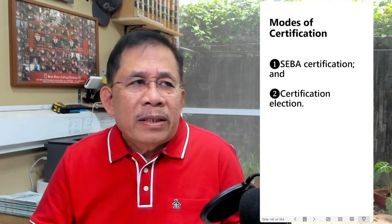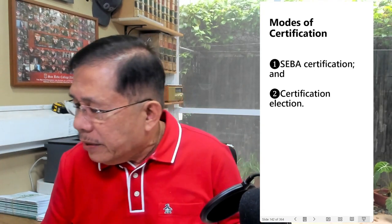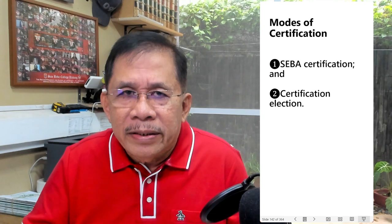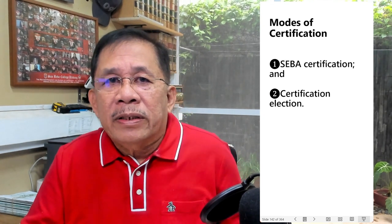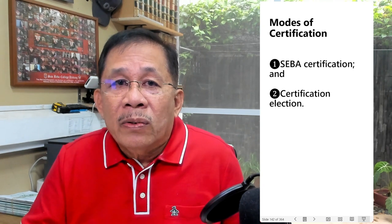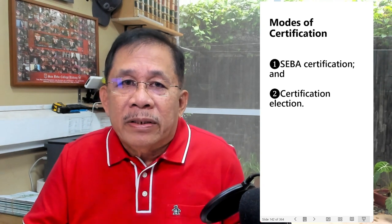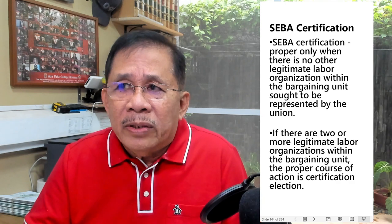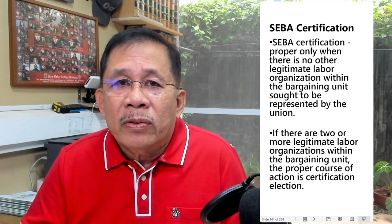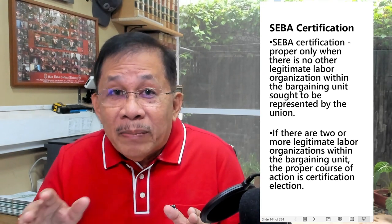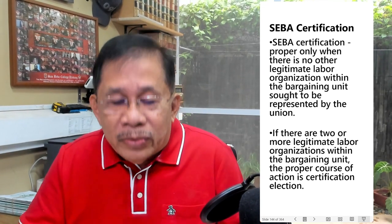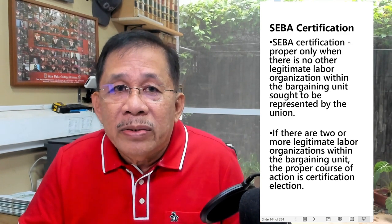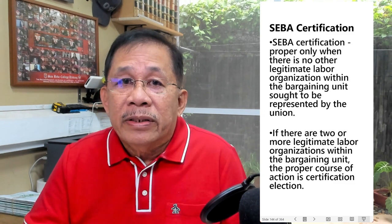The bargaining agent must be certified. There are two modes of certification: first is SEBA certification, which stands for Sole and Exclusive Bargaining Agent. SEBA certification is proper only when there is no other legitimate labor organization within the bargaining unit. If there are two or more legitimate labor organizations within the bargaining unit, the proper course of action is certification election.